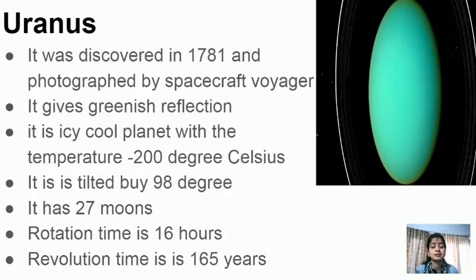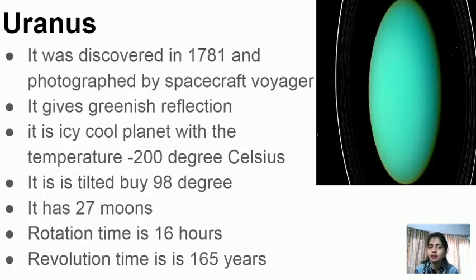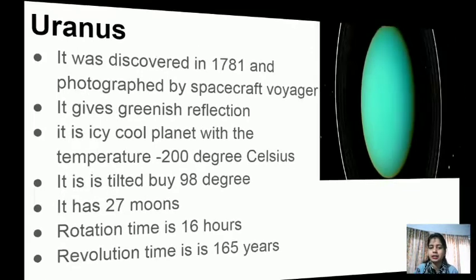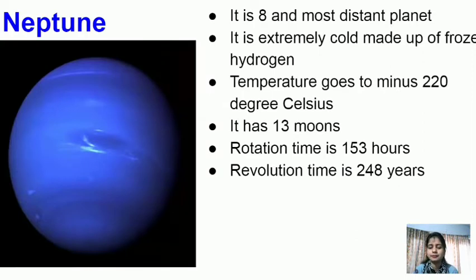Neptune is the 8th and most distant planet — extremely cold and frozen, with hydrogen ice. Temperature goes down to minus 200°C. It has 13 moons. Rotation time is 15.3 hours and revolution time is 248 years because of how far it is from the Sun.